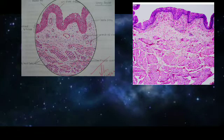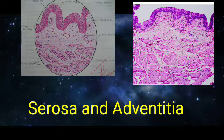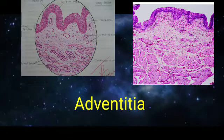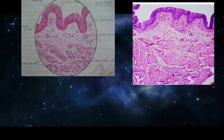The outer histological layer of the bladder is serosa or adventicia. The part of the bladder covered with peritoneum shows serosa, which is simple squamous mesothelium with underlying connective tissue. The rest of the parts not covered by peritoneum show adventicia, which is only connective tissue with no mesothelium. The superior surface of the bladder is covered by serosa, while the rest shows adventicia.